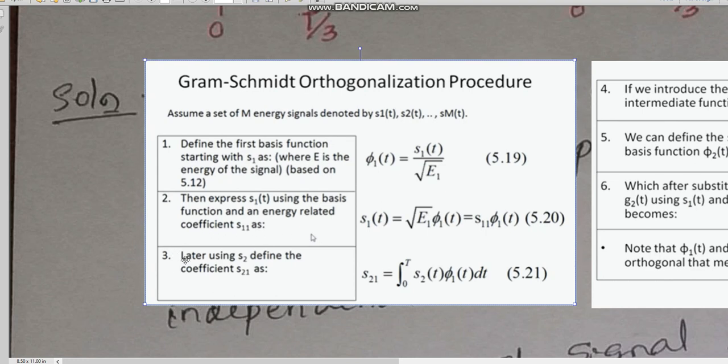The third step. Using S2, we define the coefficient S21. S21 is defined by this equation: integration from 0 to t, S2 of t, phi1 of t, dt.